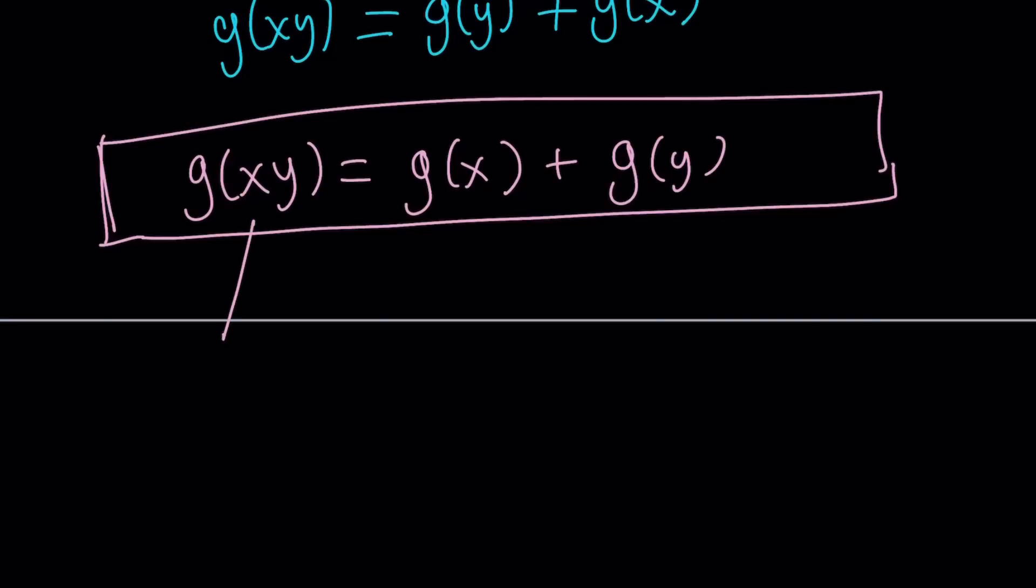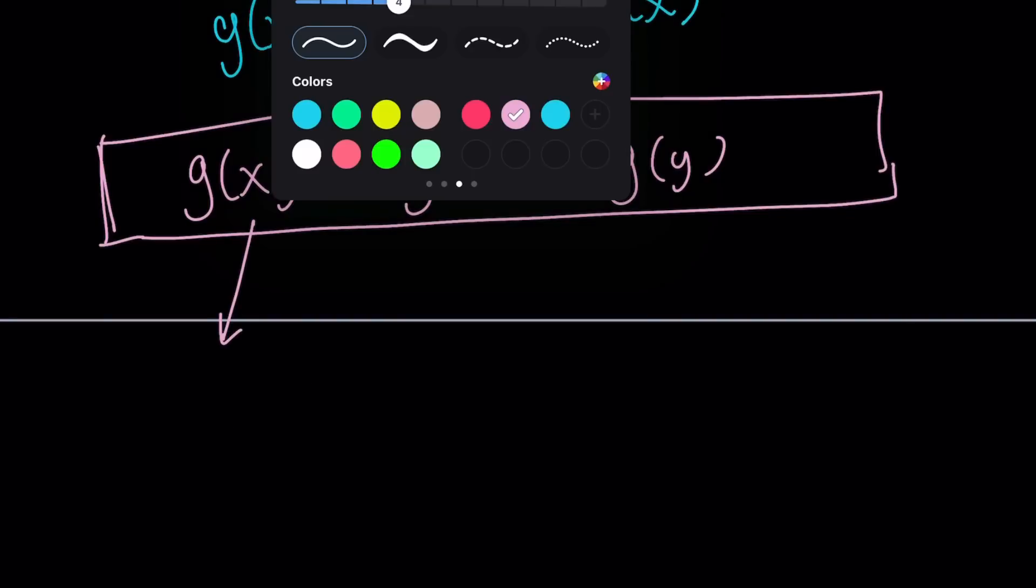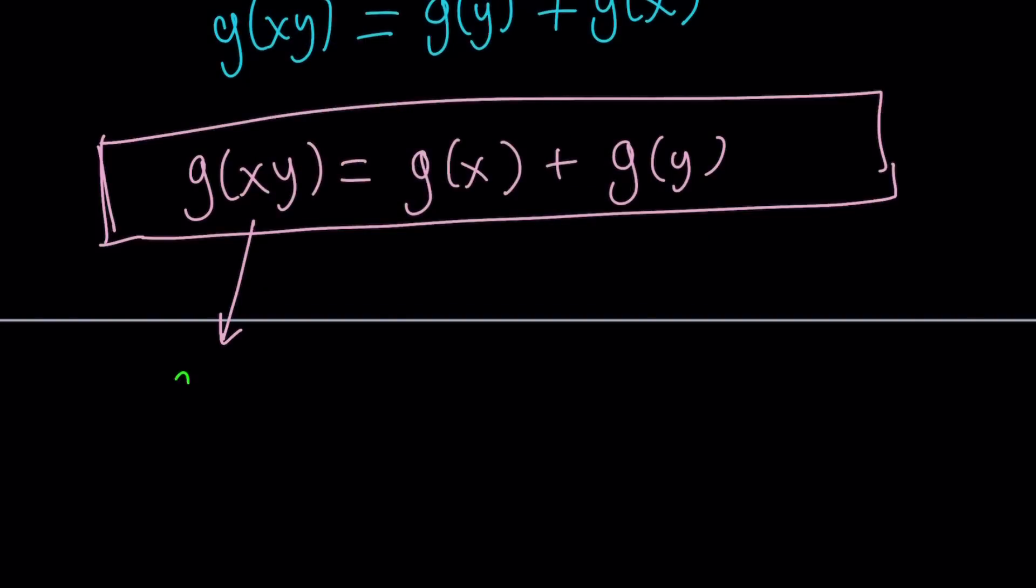So from here, g of x can be written as k times ln x. Now you can use any base here, but the constant k actually takes care of it. So we don't have to use, it could also be ln x, but a constant will also work. So this kind of represents all bases in this case.